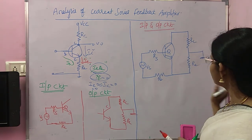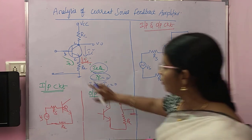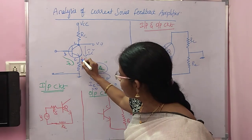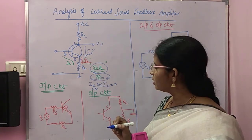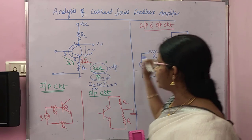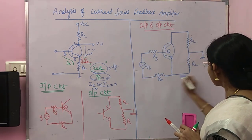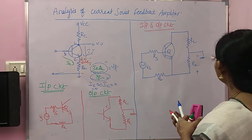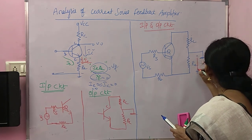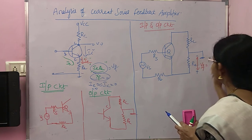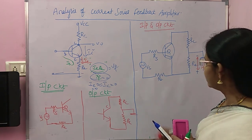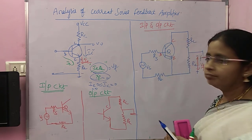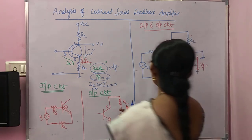This is our combined input-output circuit. The feedback voltage VF is identified by taking the emitter end as plus and the ground end as minus — that voltage across RE is your VF. Now we will draw the H-parameter model by replacing the transistor with its H-parameter equivalent.